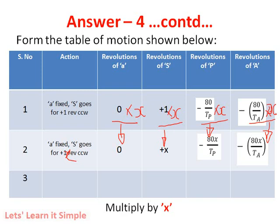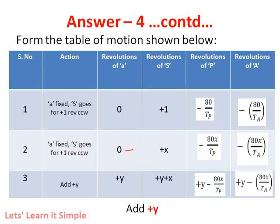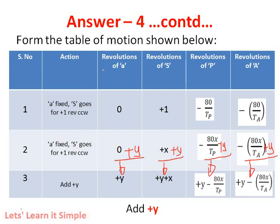The third step is to add plus Y to each column. Adding Y: arm becomes +Y, sun becomes +Y+X, planet becomes +Y − 80X/TP, and annulus becomes +Y − 80X/TA. These are the final expressions in the table of motion after all three steps.